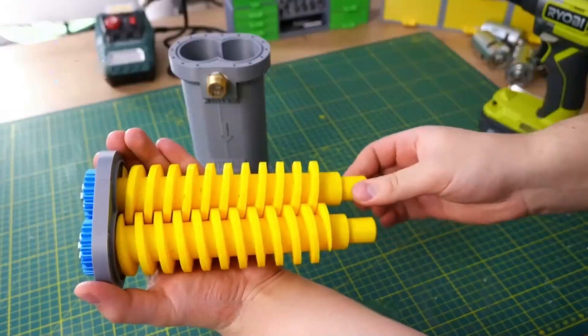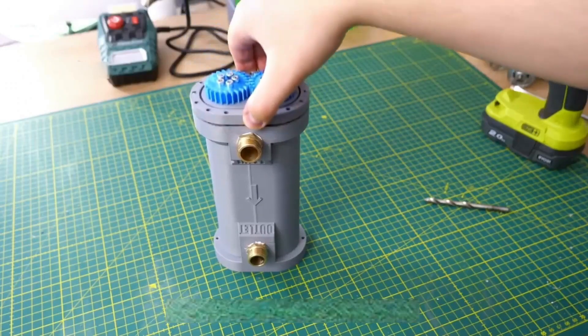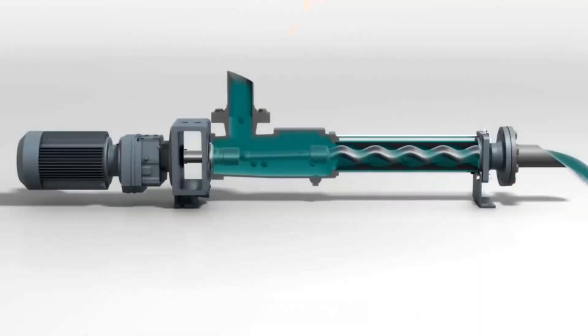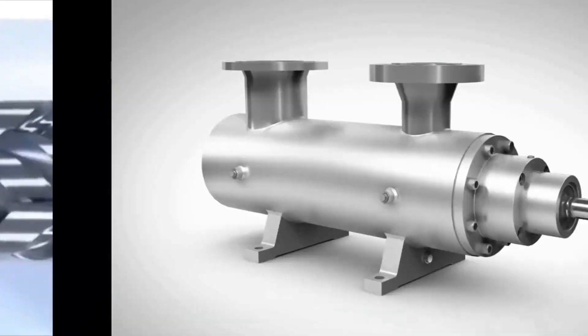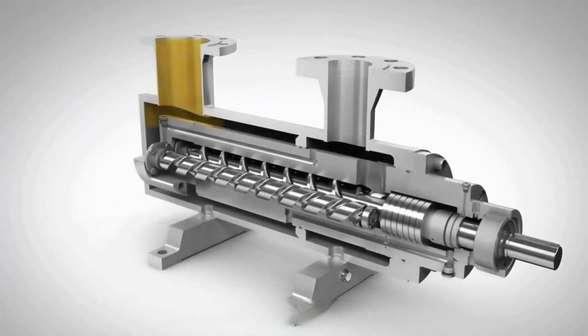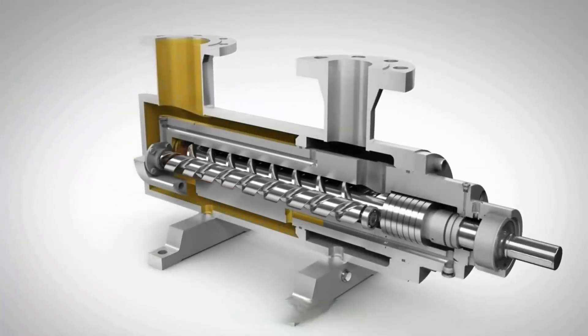Progressive cavity pumps are generally categorized by the number of screws. There are mainly single screw pumps, twin screw pumps, and three screw pumps. Screw pumps have a simple and reliable structure. When the screw pump is running, the electric motor provides power to drive the screw rotation.